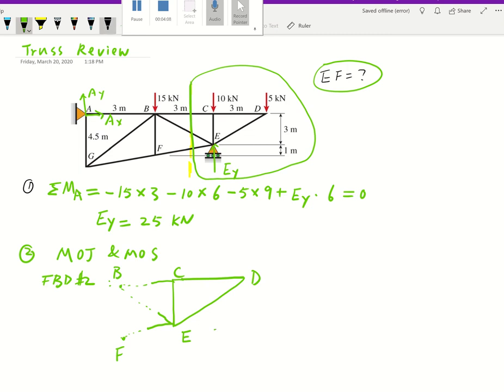Now let's go ahead and draw all the forces acting on it. At C we have this 10 kilonewton. At D we'll have this 5 kilonewton. At EY you calculated is going up as 25 kilonewtons.